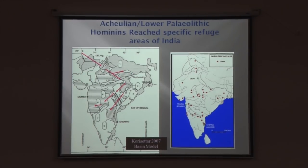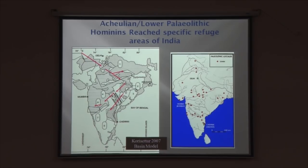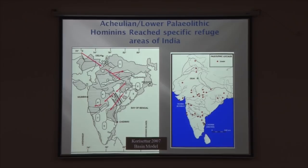There are hardly any sites in the Ganga Basin, Indus Basin, or sub-Himalayan regions — only occasional sites. The granitic region has no sites at all. This is why we are concentrating our efforts in the Proterozoic basin areas to be more productive and contribute more towards understanding the peopling of the globe during the Out of Africa 1 and Out of Africa 2 phases.